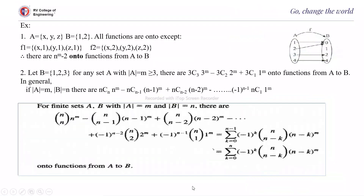We will continue from the previous lecture on types of functions. Suppose A = {x, y, z} and B = {1, 2}. All functions are onto B except those mapping to x1, y1, z1 or x2, y2, z2, because the codomain has 1 and 2. So only functions where all elements map to the same element are not onto. The remaining n^m minus 2 onto functions exist for f from A to B.